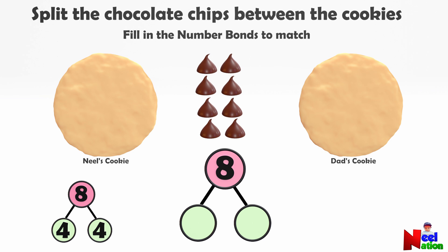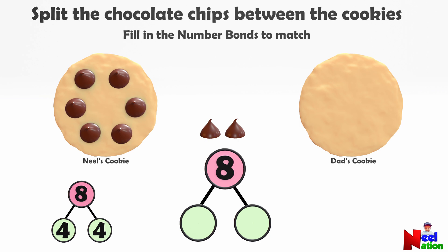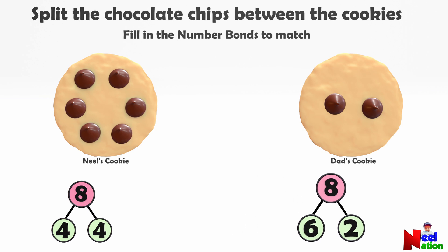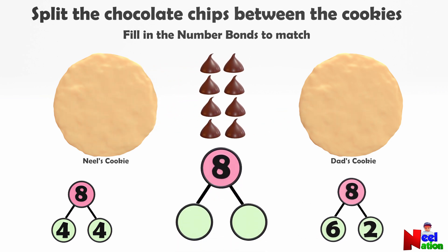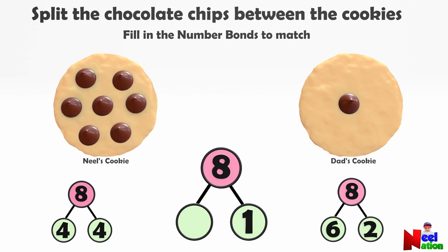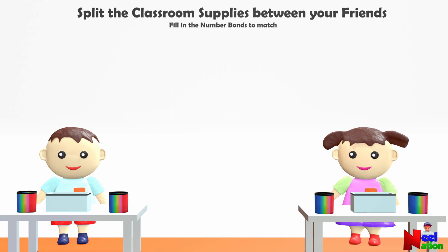I want six chocolate chips on Neil's cookie and two on Dad's cookie. Let's fill the number bonds — we split number eight into six and two. Awesome! Now comes the tricky part: if Dad wants one chocolate chip on his cookie, how many would Neil get? Seven! You are awesome! So we decomposed number eight into seven and one. Here we found at least three different ways to decompose number eight.